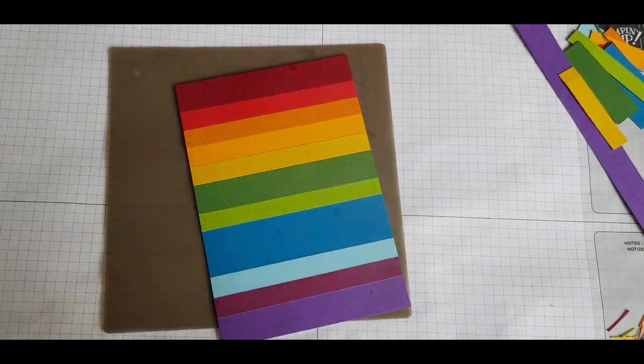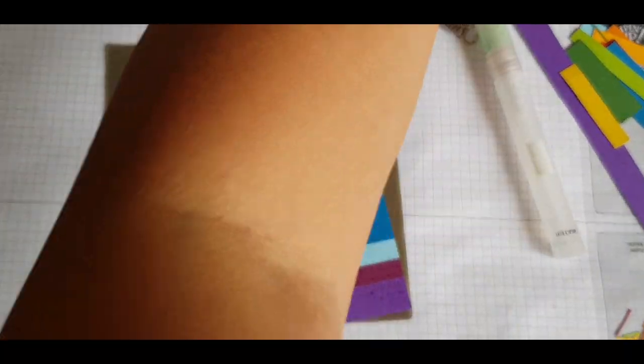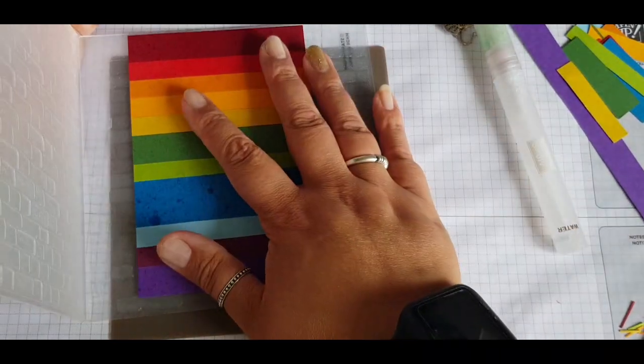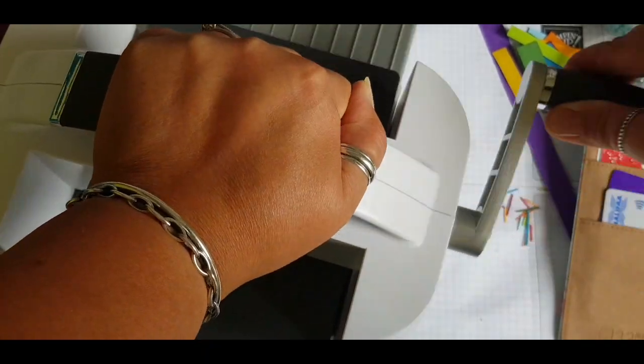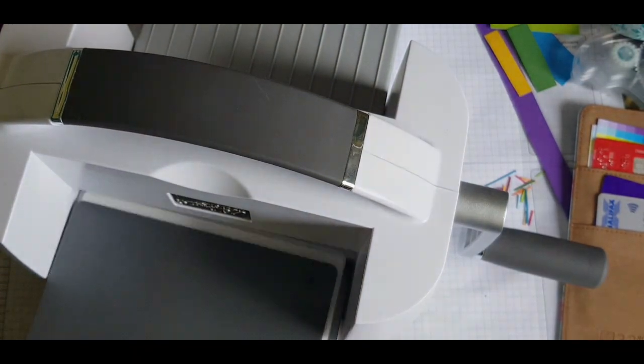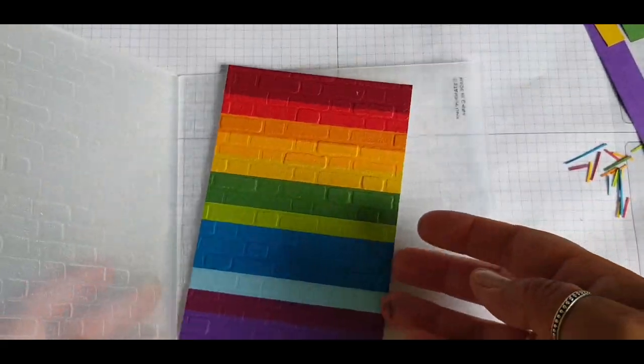You're left with this gorgeous rainbow effect card. I'm giving it a spritz with water because the layer is quite thick and this helps when you run it through the embossing folder. If you've got a particularly thick piece or want a good impression without tearing the paper, this is a good way to do it.